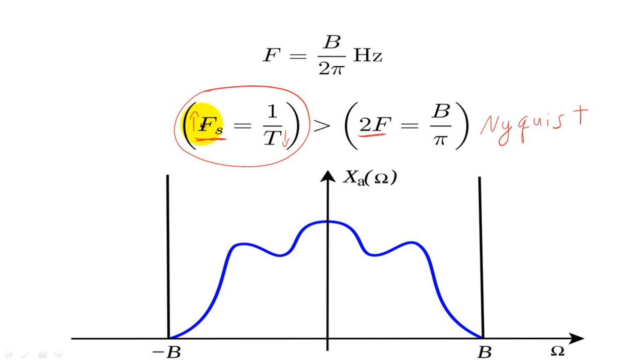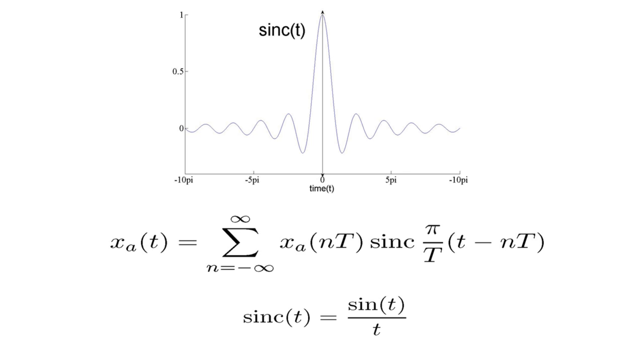Typically, we want to sample at a higher frequency than the Nyquist frequency. If we have sampled at or above the Nyquist frequency, we can perfectly recreate the analog signal X sub A of T by multiplying every sample by a sinc function centered on that sample and adding the resulting sinc functions together.